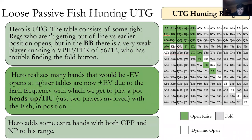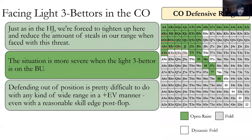We start adding more hands versus fish because we have more implied odds and we want to get heads-up with them and play pots with them. When we're facing three-bettors, we have to play fewer hands to be able to defend against their aggression.